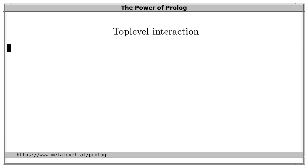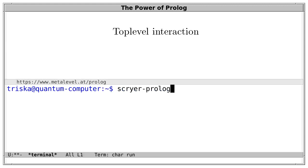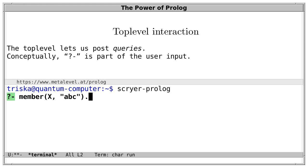What does a sensible top level interaction look like? Let's open a terminal and start, for example, Scryer Prolog. The system greets us with question mark dash — this is the top level of Scryer Prolog. It's a completely conforming top level because the top level is out of scope of the ISO standard, and we can use it to post queries. We can read question mark dash as 'is it the case that' or 'does it hold that?' Conceptually, question mark dash is part of the input — even though the system writes it for us, it acts as if we had written it.